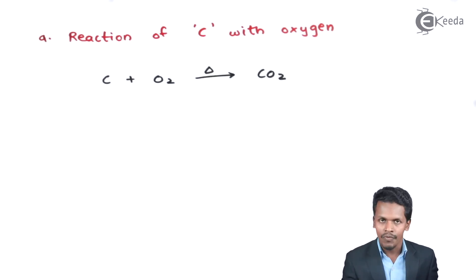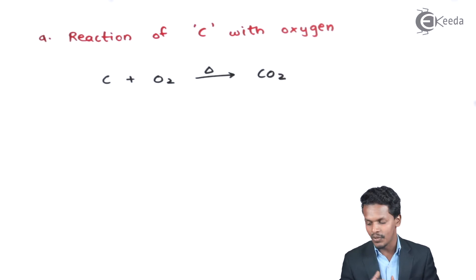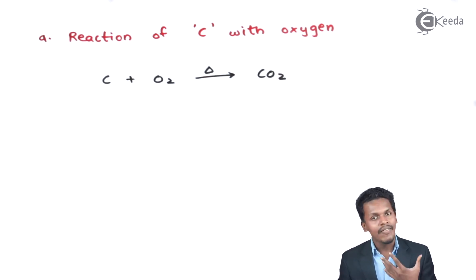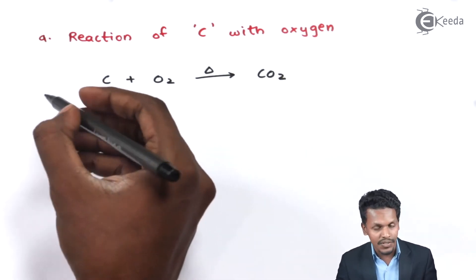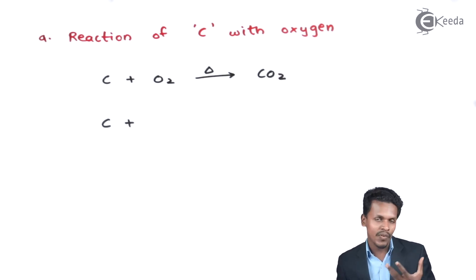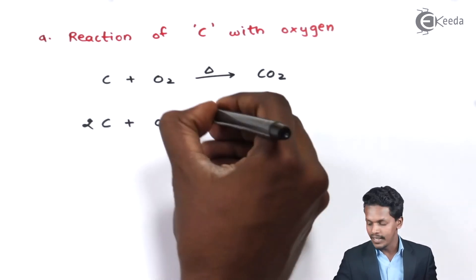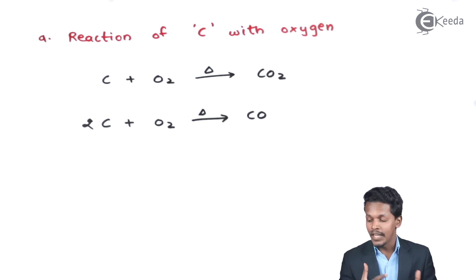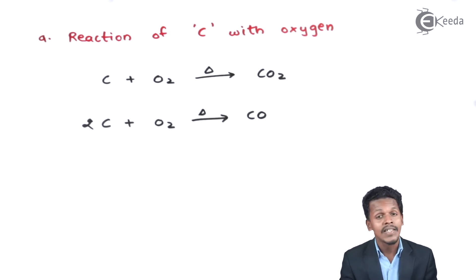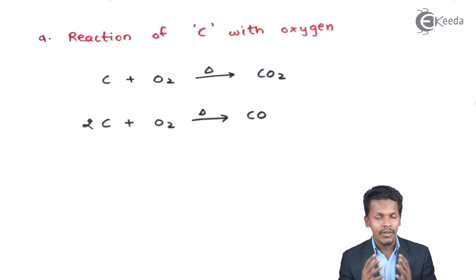When we provide an excess amount of oxygen we get carbon dioxide. But if we provide a limited quantity of oxygen, the product we get is carbon monoxide. Therefore, carbon has a tendency to form CO2 as well as CO. Since carbon has a valency of four, it forms a very stable electronic configuration whenever a molecule is formed.